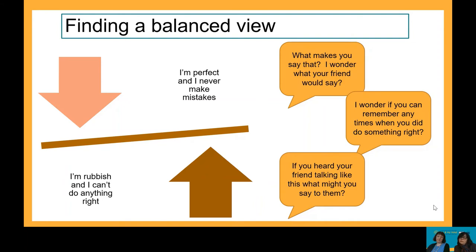It can be really hard to hear your child talking about themselves in a negative way, but try to hold back from immediately stepping in and disagreeing with them. You may be desperate to tell them they're beautiful, clever, or funny — whatever you think will reassure them — but try to hold back and provide a listening space for them. You can then try using an open style of questioning to encourage your child to take a step back and see the bigger picture.